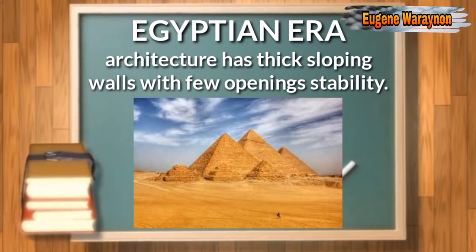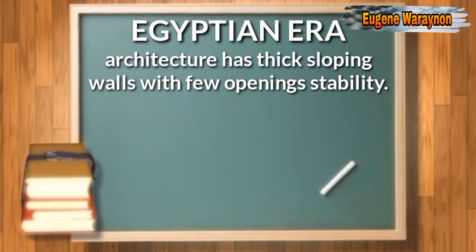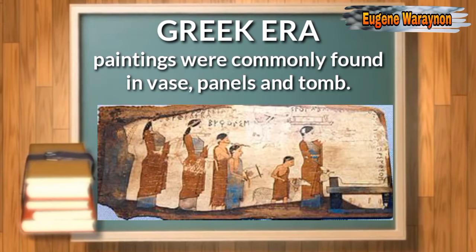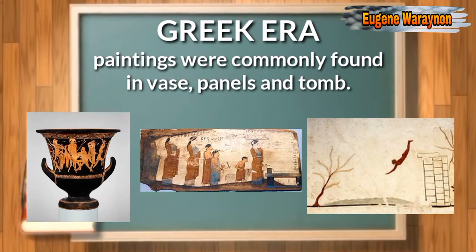Egyptian architecture has thick sloping walls with few openings for stability. All walls, columns, and piers are covered with hieroglyphics. Ornamentations were symbolic. Temples were aligned with astronomically significant events like solstices and equinoxes with precise measurements. Classical Greek era artworks are most commonly found in vases, panels, and tombs, depicting natural figures. Subjects were battle scenes, mythological figures, and everyday scenes.